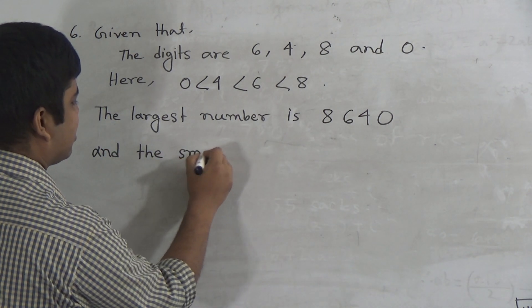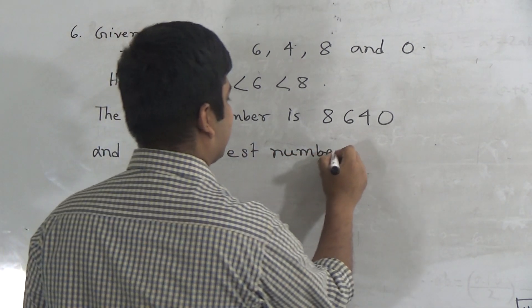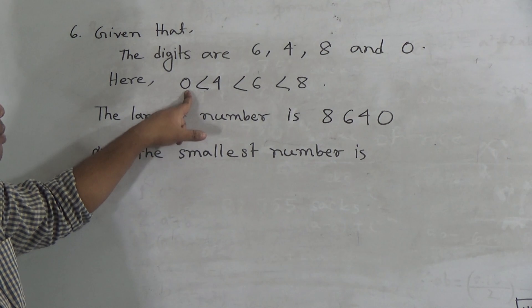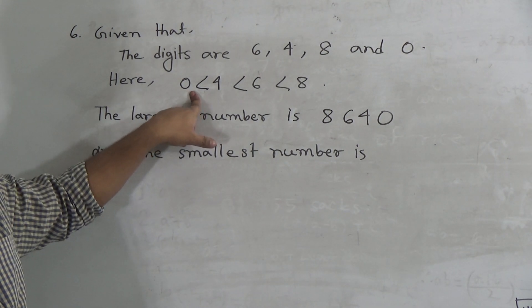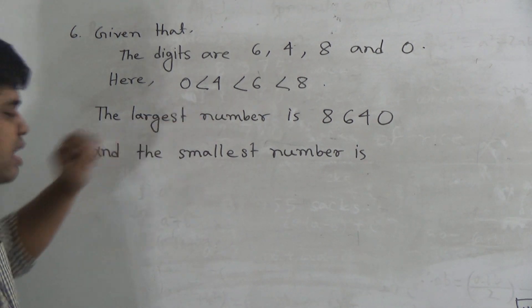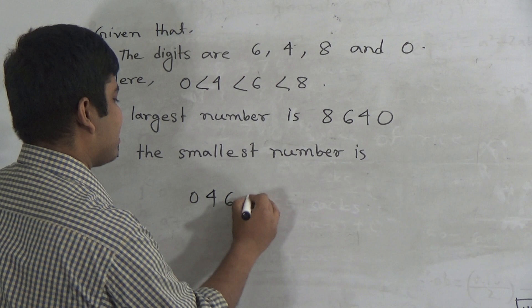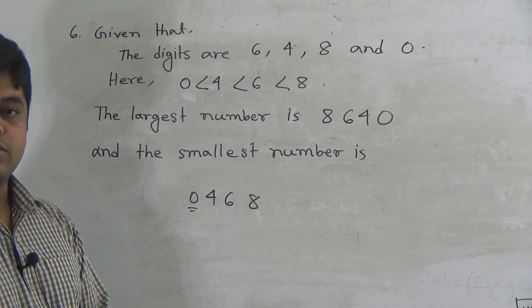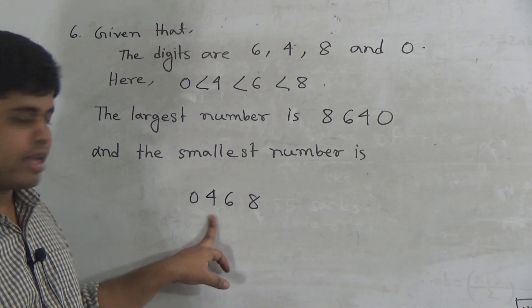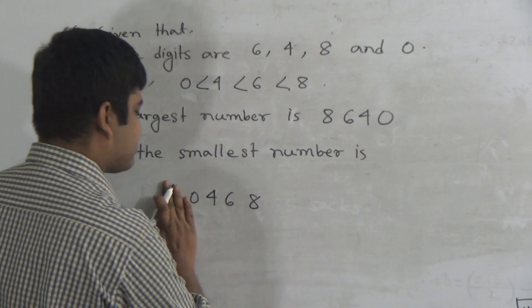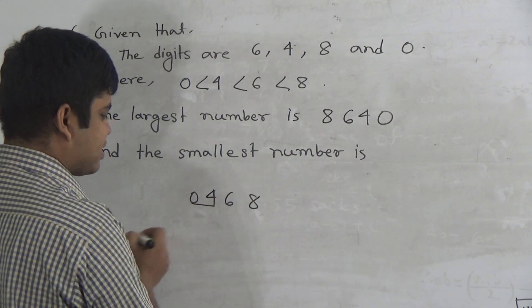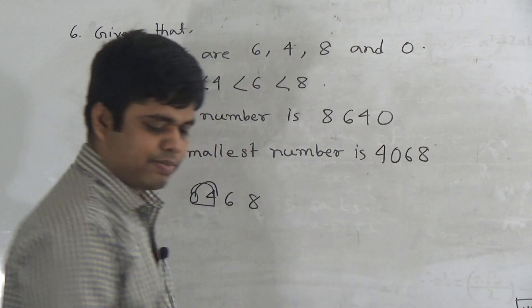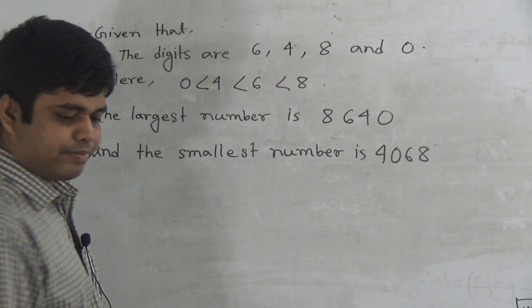The smallest number: my student notice — smallest number means we write the number from smaller, but here 0. If we write 0 on the left, then the number will be a 3-digit number. That means left zeros have no value. Suppose this number will be 0468, but this 0 has no value — we read this number as 468. But the question asks you to use all these digits. So we just change these two places: 4 is there and 0 is there. So 4068 will be the smallest number using these digits.